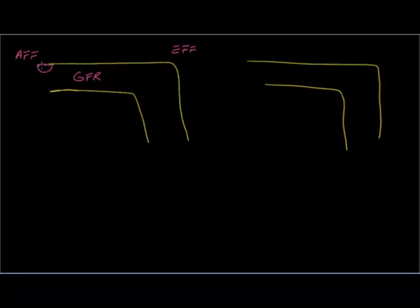So let's say you have constriction of the afferent, which is not difficult. So if you constrict the afferent, what do you think? GFR down the system will just decrease. So basically GFR decreases. And you already constrict something, that's why renal plasma flow will be decreased.